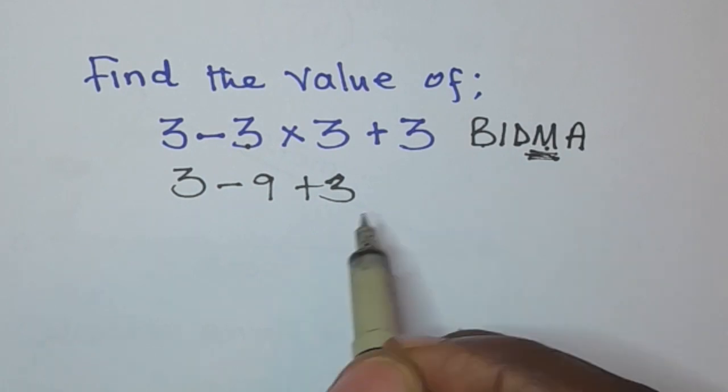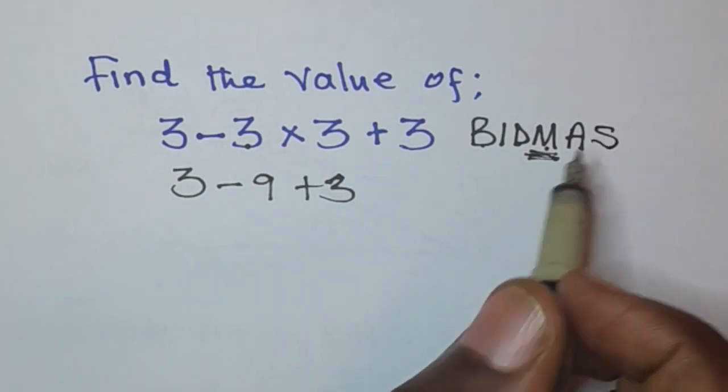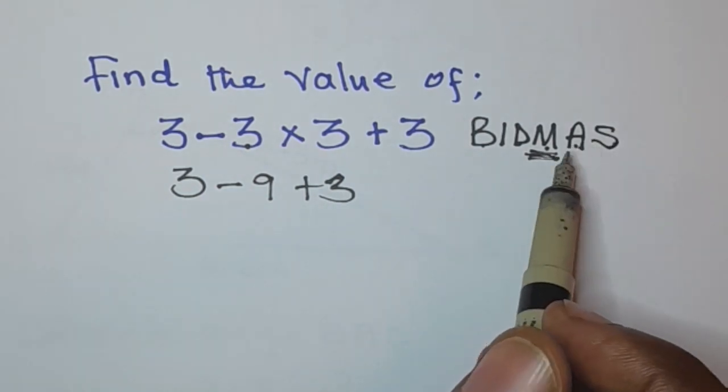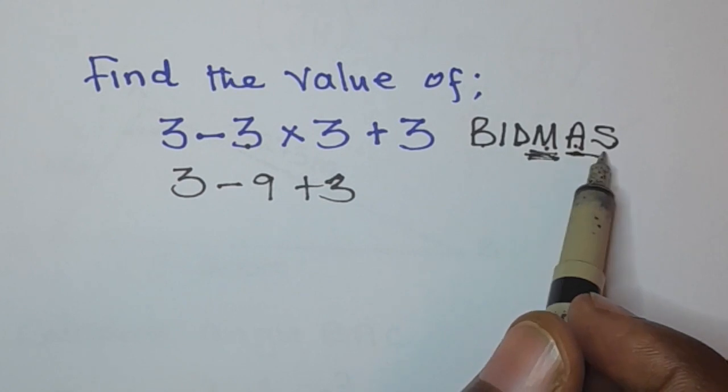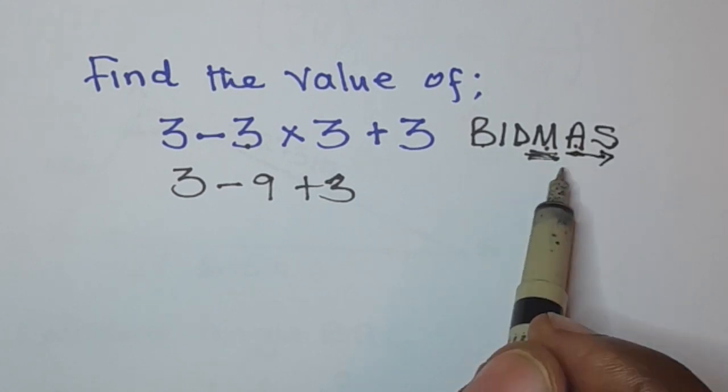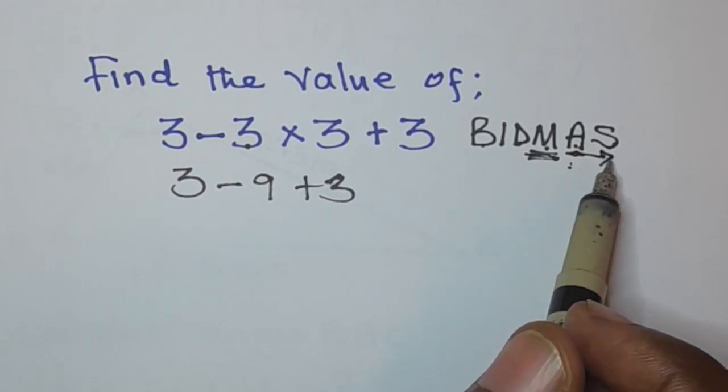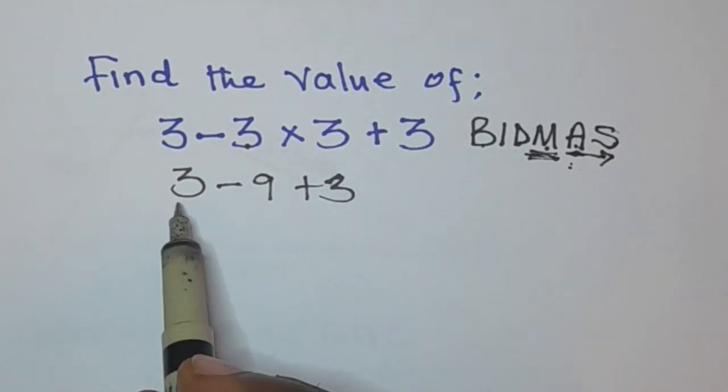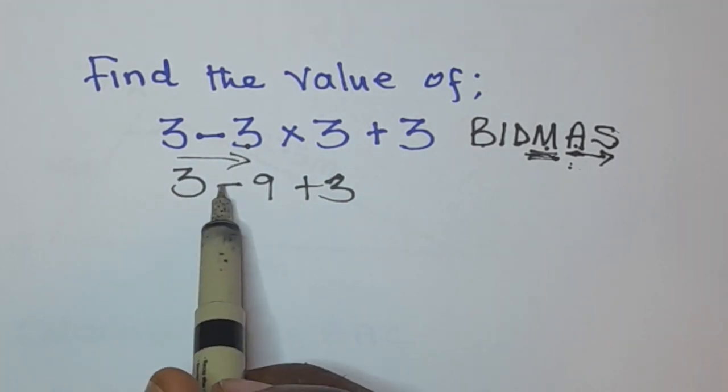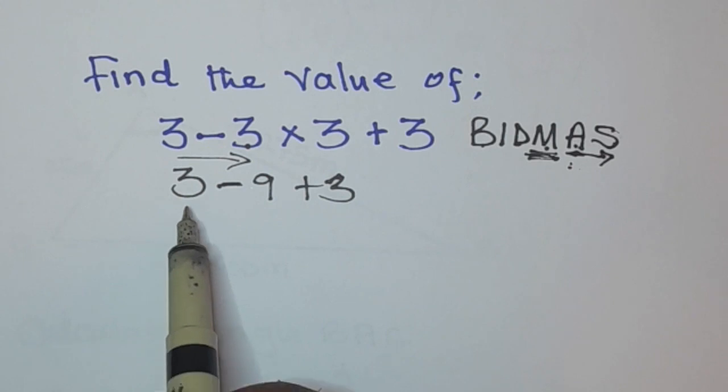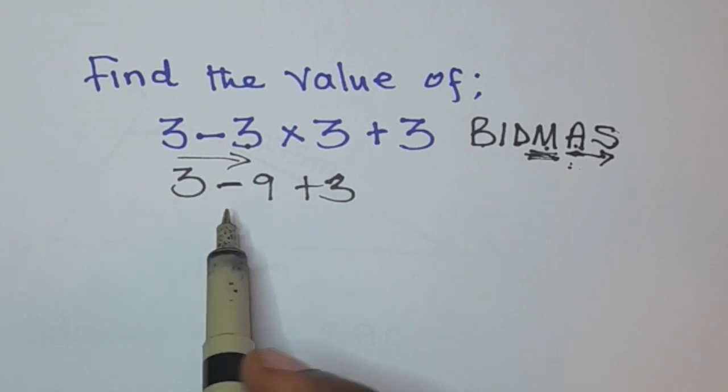Then addition and subtraction. Oh this is actually BIDMAS. Addition and subtraction you work them out from left to right. If addition comes first you are going to begin with it. If subtraction comes first you are going to begin with subtraction. So we are moving left to right. So we move like this from left to right. You can see that subtraction is starting. So we will start by it.